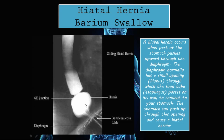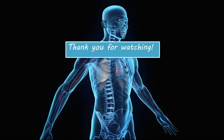On barium swallow, you see a bubble or bulge appearing above the diaphragm which is not supposed to be there. The gastroesophageal junction acts as a landmark, indicating that this bubble above it is actually part of the stomach — not the esophagus. This is typically what a hiatal hernia looks like on a barium swallow. Thank you for watching — please like, comment, subscribe, and share.